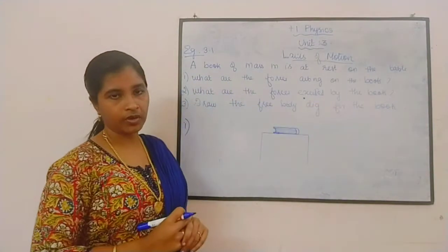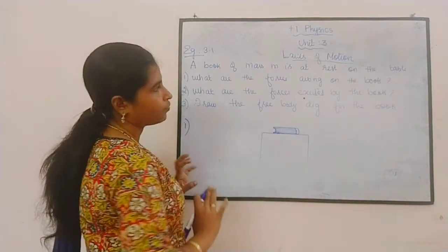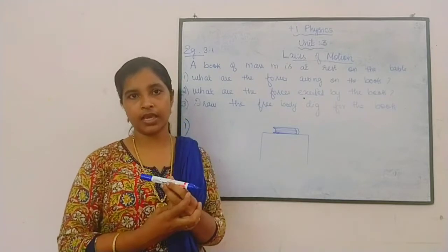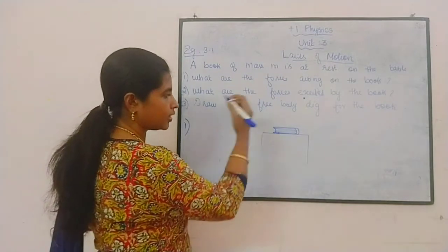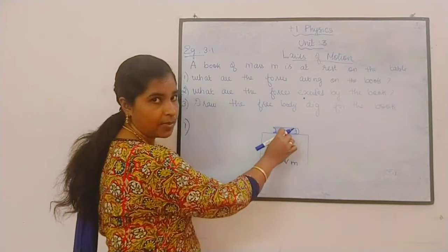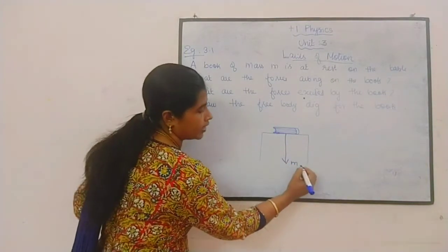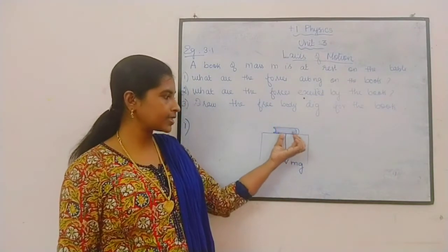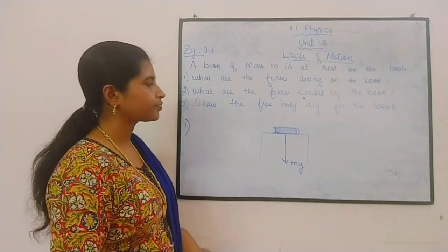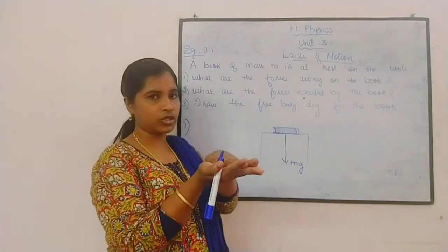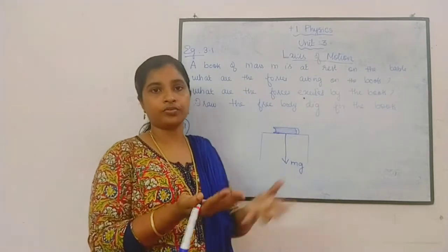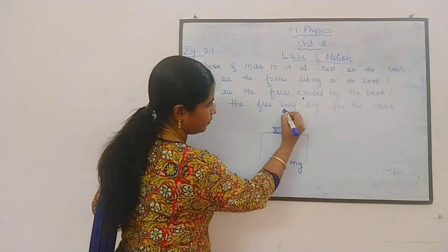What are the forces acting on the book? First, we know that there is a gravitational force acting on it. Gravitational force means mass times acceleration due to gravity. So on this book, a gravitational force is acting — that is F equals mass M times acceleration due to gravity g. The book's mass is M and the acceleration is the acceleration due to gravity. Since it is placed on a table, the table exerts a normal force on the book.